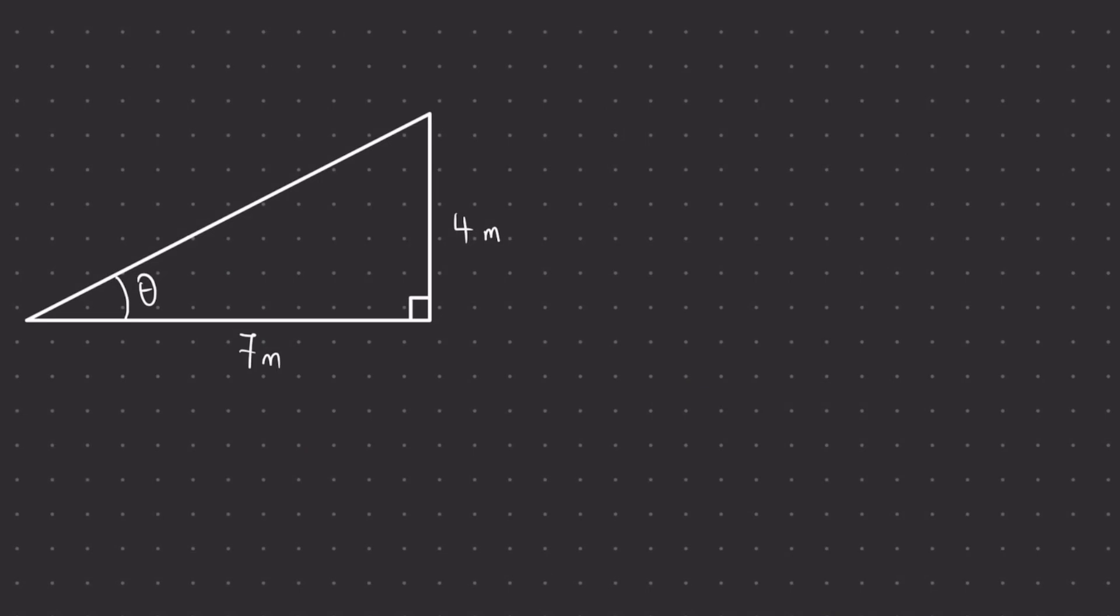Let's have a look at this example together. So just as before, we're going to take this triangle and label the sides. Here we have the angle theta, so opposite that angle is the opposite, and next to that angle, or adjacent to it, is our adjacent.